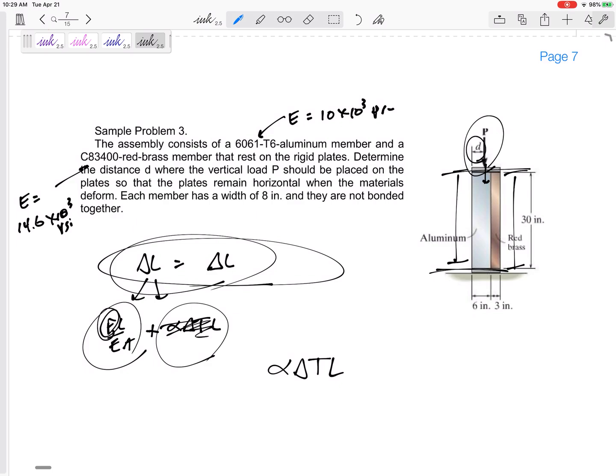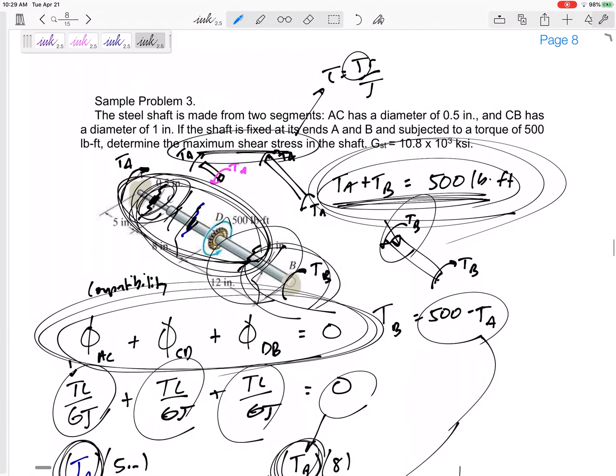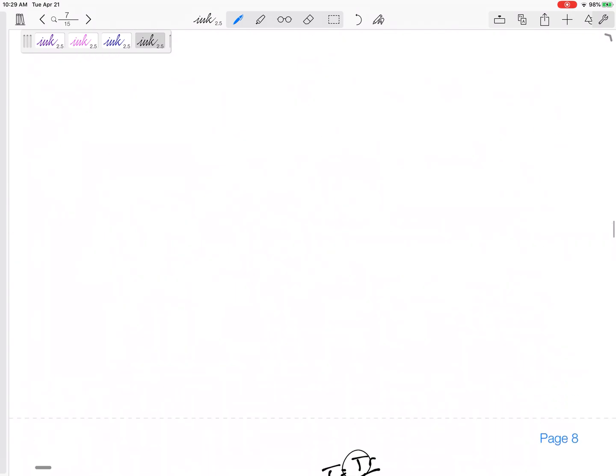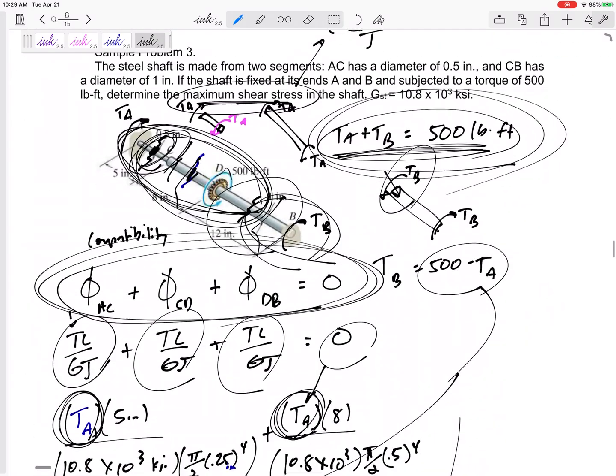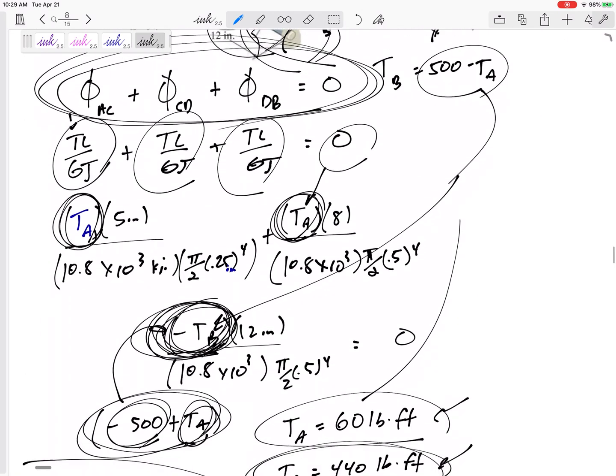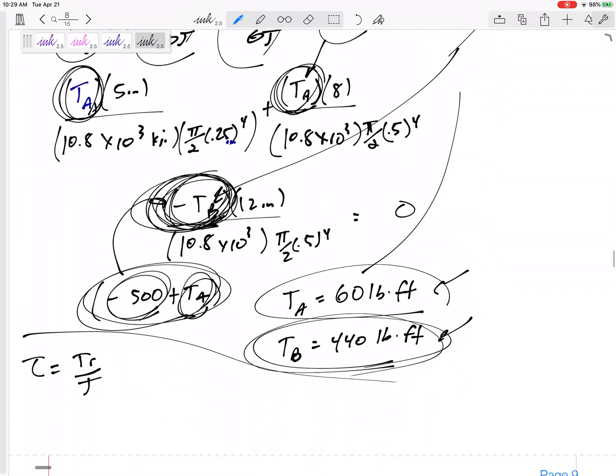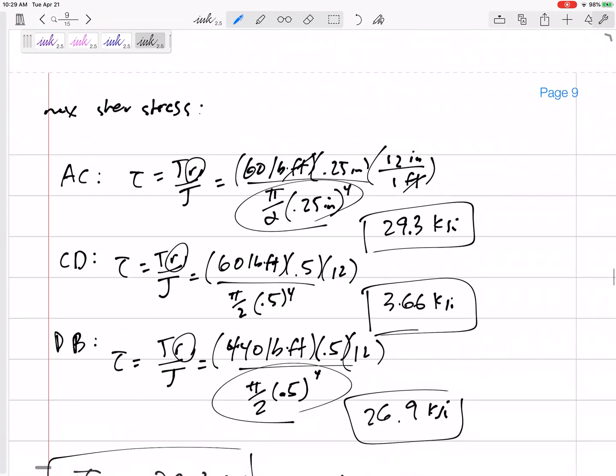But don't try to memorize every problem. Try to memorize the process. Or not memorize the process, but understand the process. It's all about understanding. There are certain cases like two materials or beams that are fixed on both ends that are statically indeterminate problems. And statics is not enough. And so with this one, compatibility, either the delta L or the angle of twist helps us to solve for everything that we need to solve for.